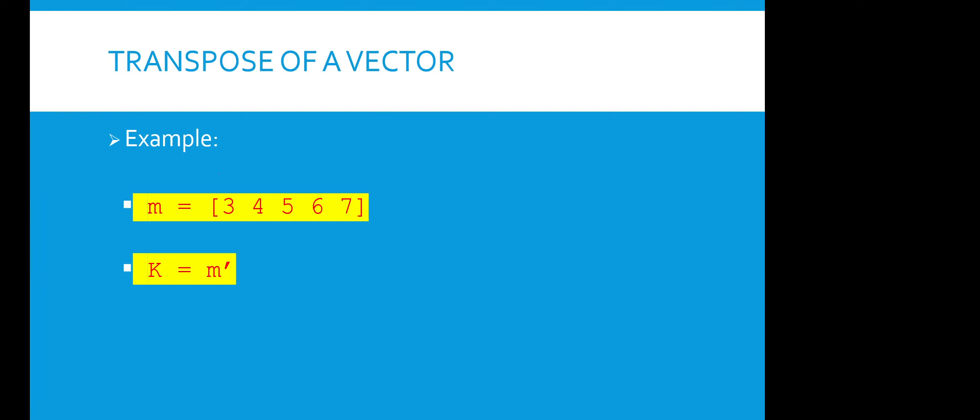Next topic we are seeing is transpose of a vector. It is nothing but, for instance, if I have a row vector it will convert into column vector and if I have column vector it will actually interchange the things.